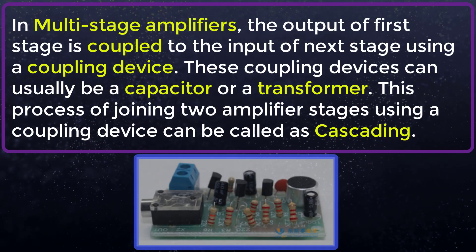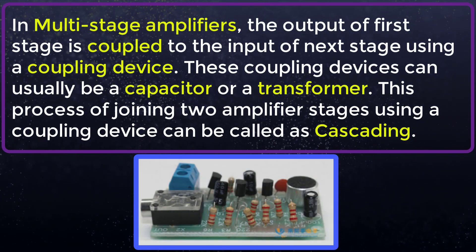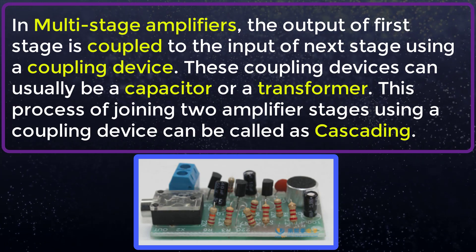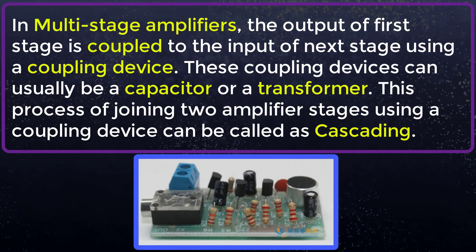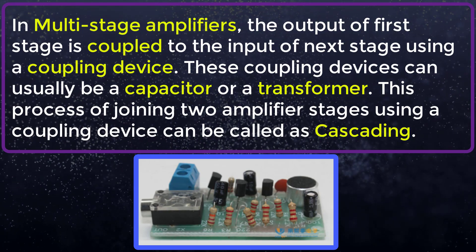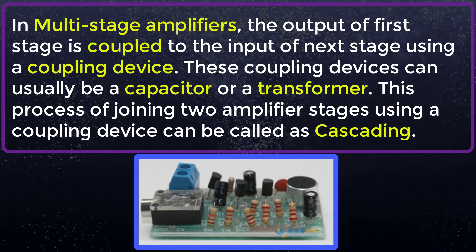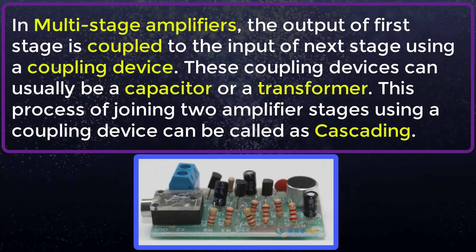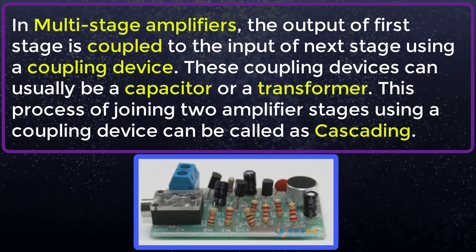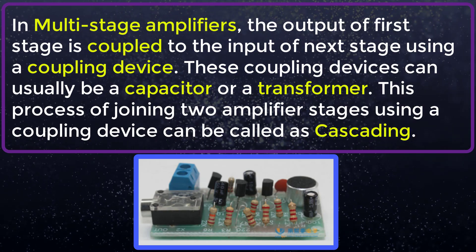In multistage amplifiers, the output of the first stage is coupled to the input of the next stage using a coupling device. These coupling devices can usually be a capacitor or a transformer. This process of joining two amplifier stages using a coupling device is called cascading.